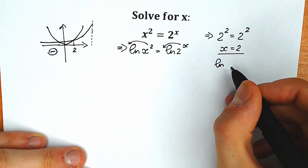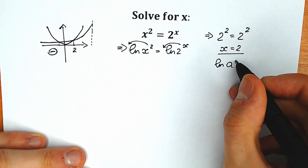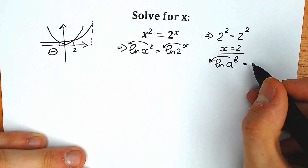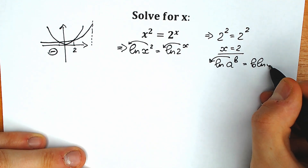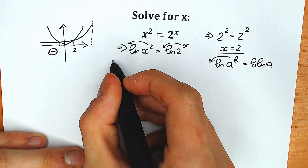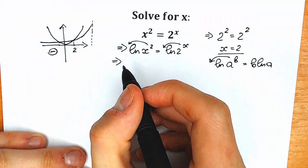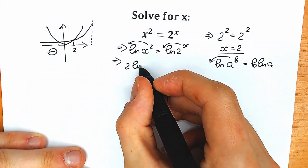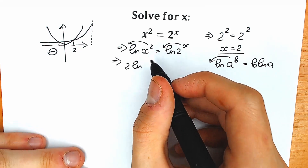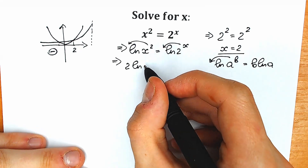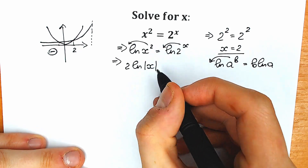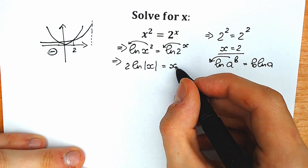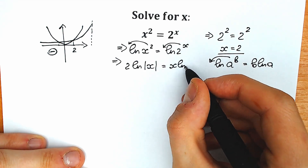Whenever we have natural log of a to the power b, we can easily write b in front: b times natural log a. Let's do this right now, but with one really tricky moment. We can write 2 times natural log, but don't forget that x can be negative, so we need to put absolute value brackets. Equal to, on the right side we have x times natural log 2.